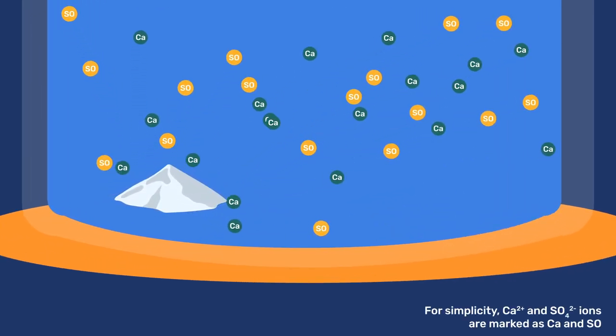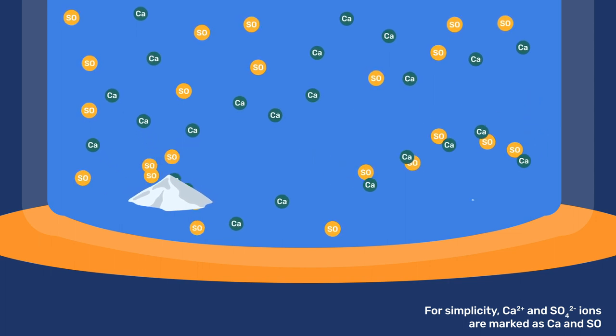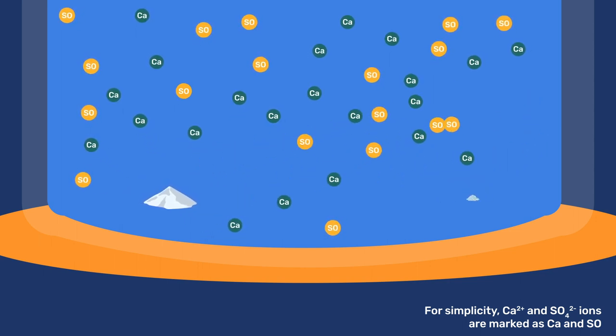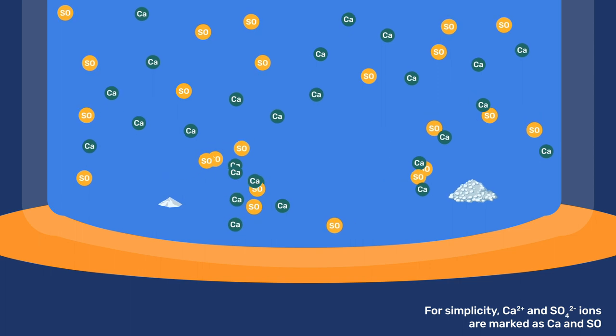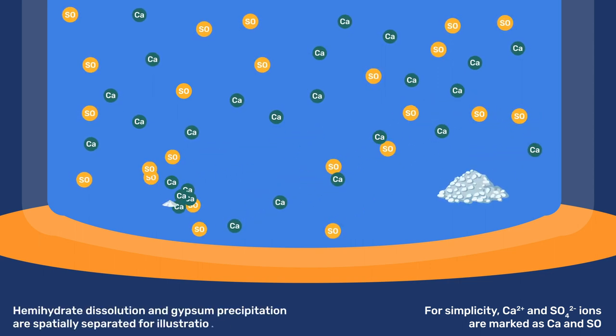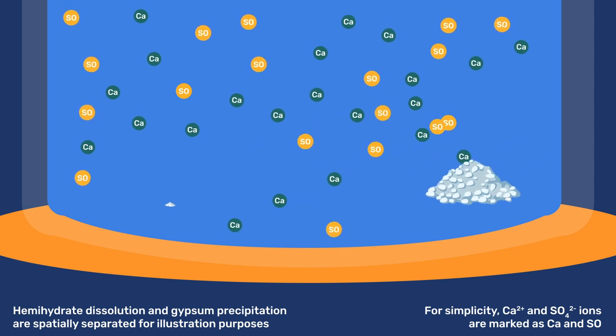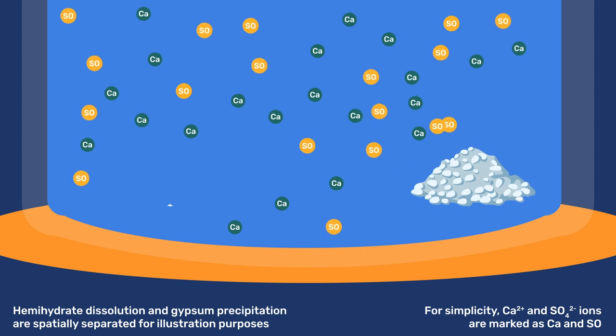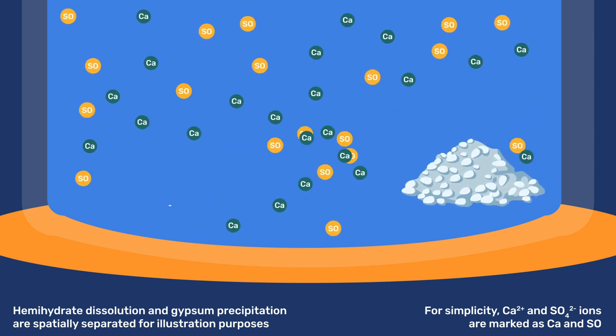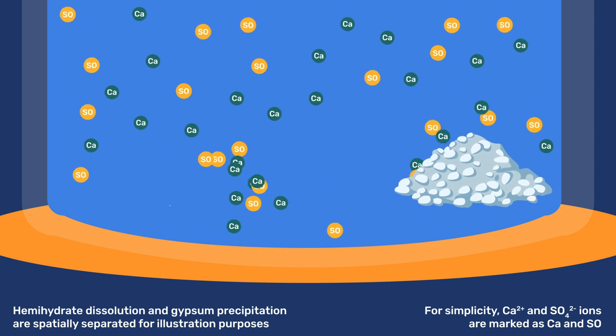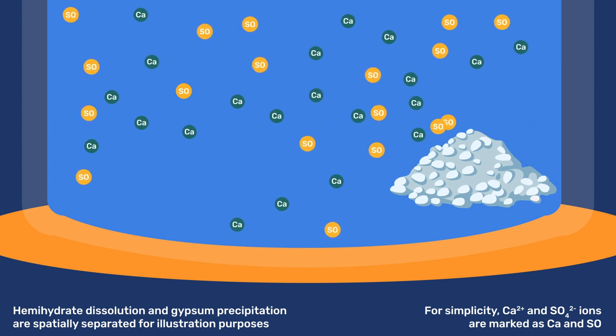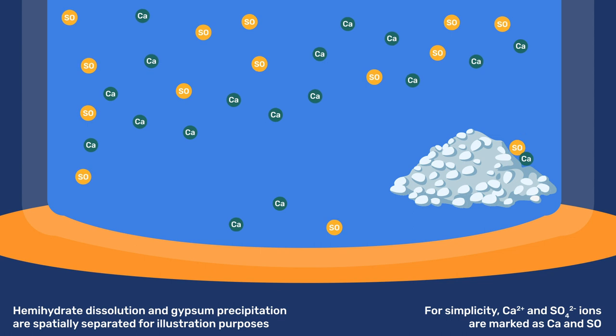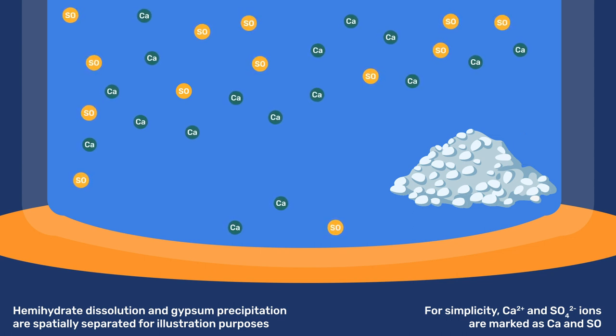Because gypsum has a lower solubility than hemihydrate, when calcium and sulfate ions are released in solution by the hemihydrate, their concentrations rapidly exceed the solubility of gypsum, and gypsum will precipitate consuming ions from the solution. This drives hemihydrate to continue dissolving without ever reaching its saturation, causing it to be eventually completely consumed if water remains available. The coupling of these reactions is a typical characteristic of mineral binders whereby a low solubility phase precipitates, consuming ions released by the dissolution of another, more soluble phase.